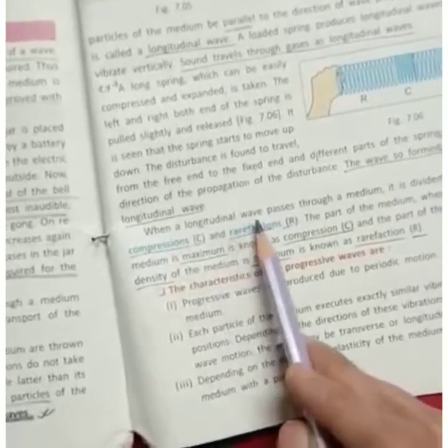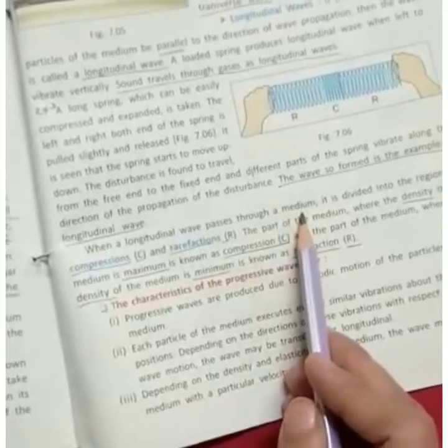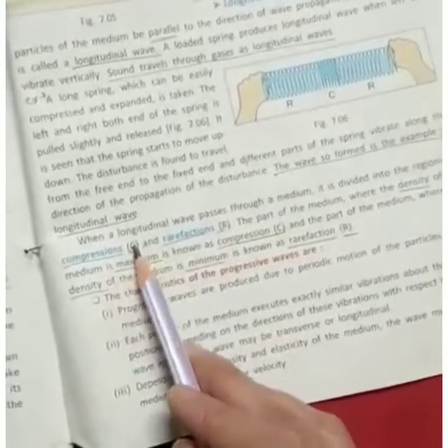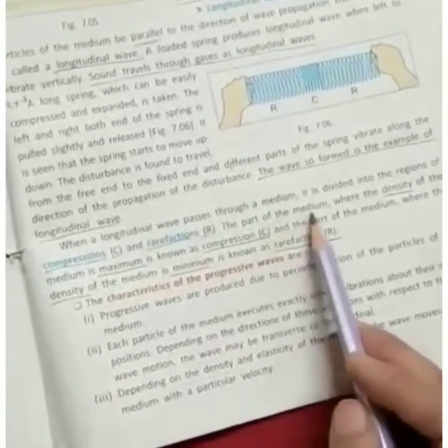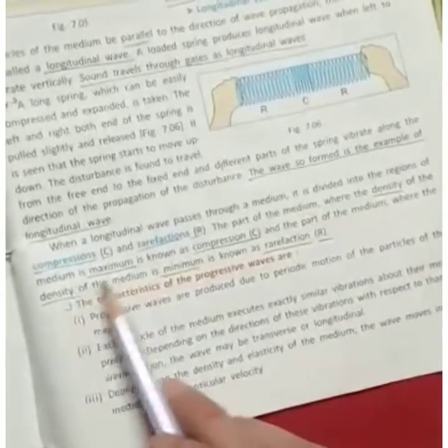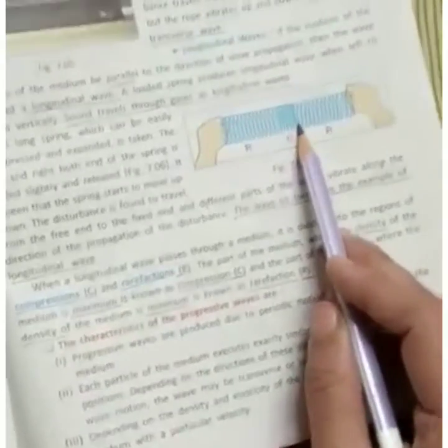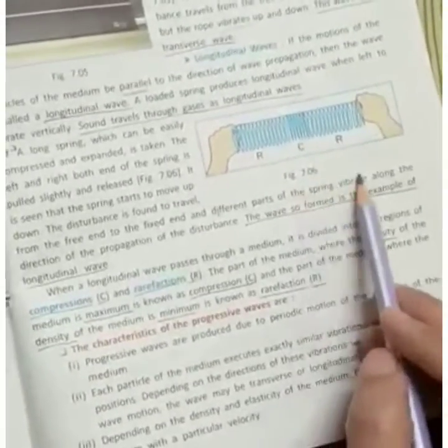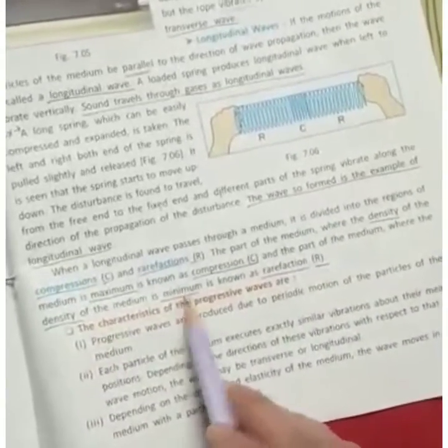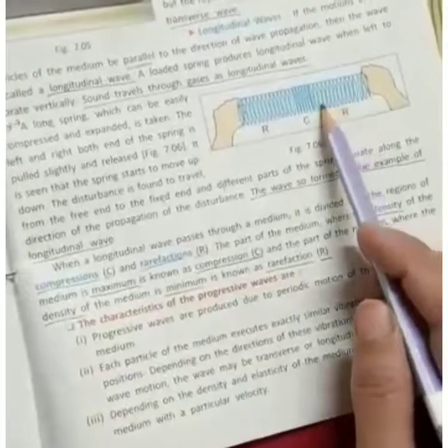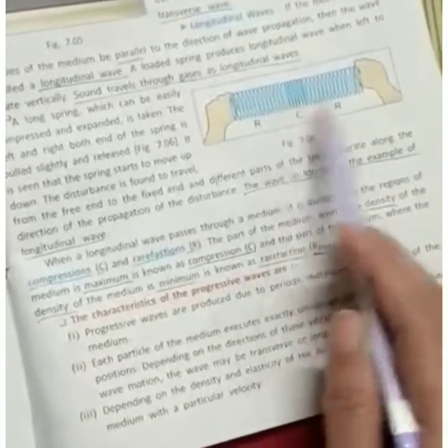When a longitudinal wave passes through a medium, it will be divided into two regions: C and R. C is compression and R is rarefaction. Part of the medium where density is maximum is compression. You can see figure 7.06. And where density is minimum, it will be rarefaction.